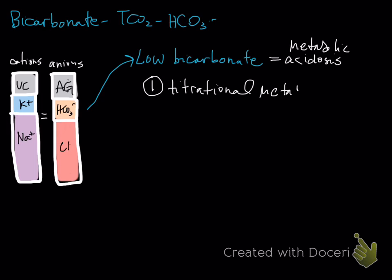So you can have titrational metabolic acidosis — that's option one. What supports that is an increase in anion gap, because the anion gap tells us there's an excess of acids.